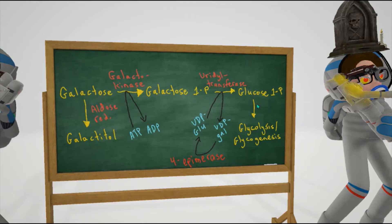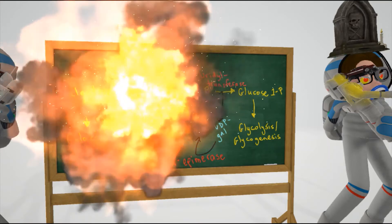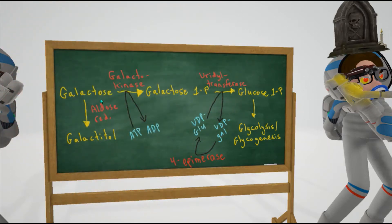In galactokinase deficiency, there's a deficiency in galactokinase - that's why here it's exploding. Thus, galactose cannot be converted to galactose 1-phosphate and is instead converted to galactitol, leading to accumulation of galactitol if galactose is present in the diet.